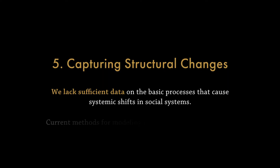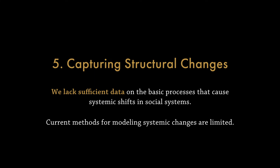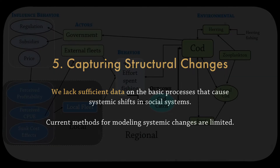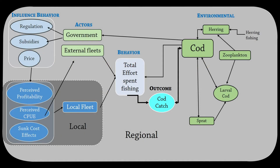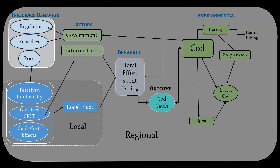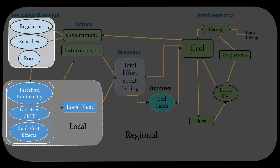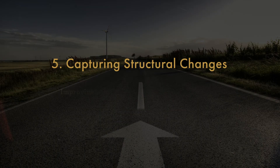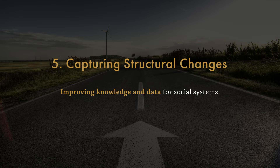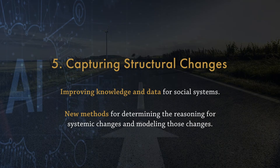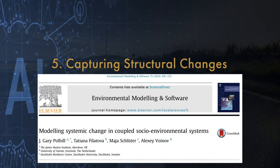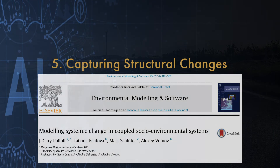The second issue relates to the fact that currently methods for modeling systemic changes are limited. The basic structure and feedbacks in models are affected by systemic changes, yet our current methods do not allow for changing these — the components of the system and the rules or equations for interactions are predefined. Two promising directions for moving forward: first, we need much more research and data to understand social systems and their dynamics, as social science research has been vastly underfunded. Second, we need advances in approaches for reasoning and modeling systemic changes, as discussed by Gary Paul Hill and colleagues in a paper published in Environmental Modeling and Software.